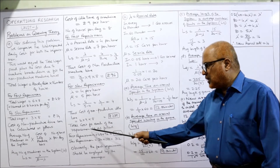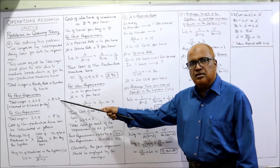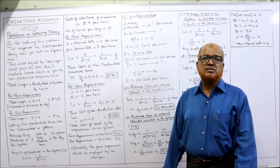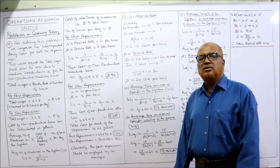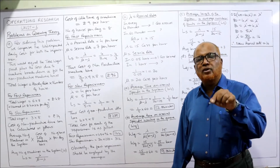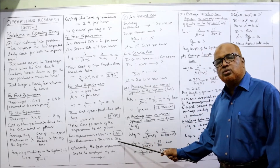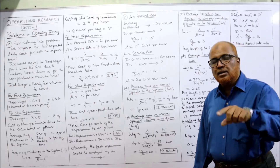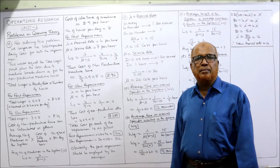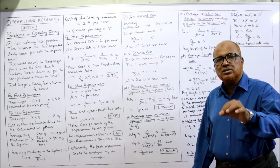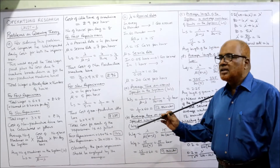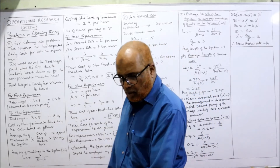For the fast repairman: wages 48 plus non-productive idle time cost 96 equals 144 rupees total. For the slow repairman: wages 24 plus non-productive idle time cost 288 equals 312 rupees total. The fast repairman's total cost of 144 is less, so we hire the fast repairman. Our objective is to reduce the total cost. This concludes problem number nine.